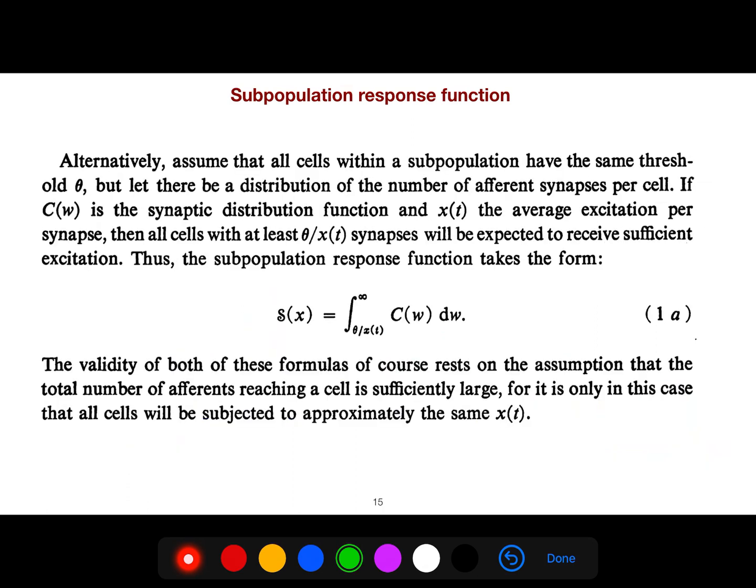The same thing, we can define this C of X, which is the synaptic distribution function. Your X of T is the average excitation per synapse, because depending on how much excitatory neurons you have, you will have a different response.